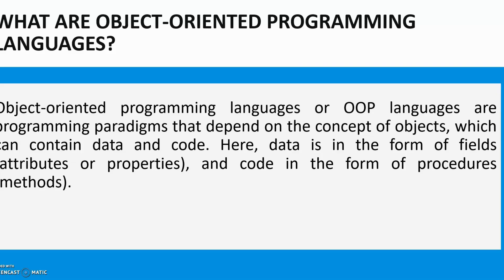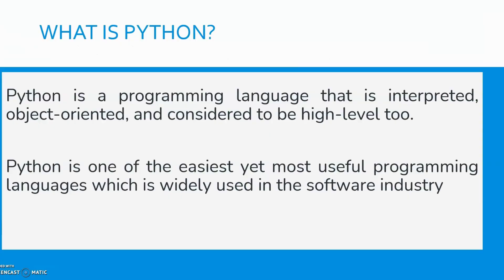So in object-oriented programming, there is code and also data. Data will be like the variables we declare, the fields, attributes, and properties. Code is like the functions we define in the language. These are the two important things to understand. Python is an interpreted language, it is object-oriented, and it is high-level. In a high-level language, when someone writes the code and you look at it, you can understand what is the flow and what is happening. You are declaring a variable — you can understand that. That kind of language is called a high-level language.